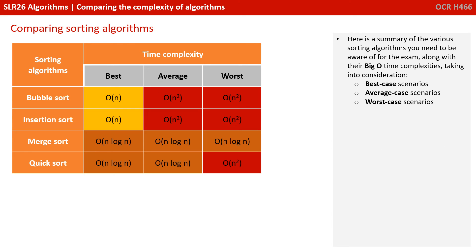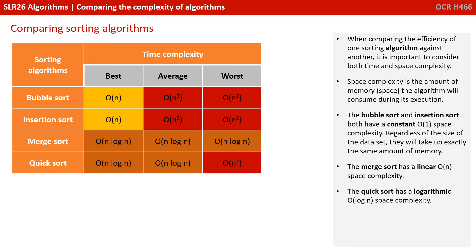Here's a summary table of the various sorting algorithms you need to be aware of for the exam, along with their big O notation time complexities, taking into consideration best, average and worst case scenarios. When comparing the efficiency of one sorting algorithm against another, it's important to consider both the time and also the space complexity. Space complexity is the amount of memory or space the algorithm will consume during its execution. The bubble and insertion sort both have a constant O(1) space complexity. Regardless of the size of the data set, they will take up exactly the same amount of memory. The merge sort has a linear O(n) space complexity, and the quick sort has a logarithmic O(log n) space complexity.